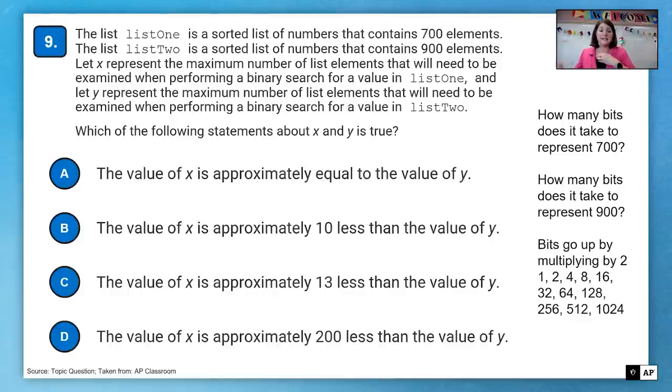You can write this down on paper during the test. 128, 256, 512, 1024. So just double the number every time. And so we notice that we go from 512 to 1024. And so 700 and 900 are both between there.